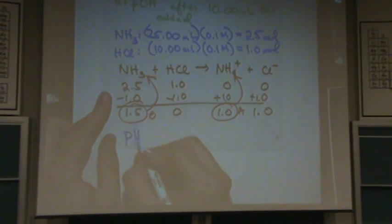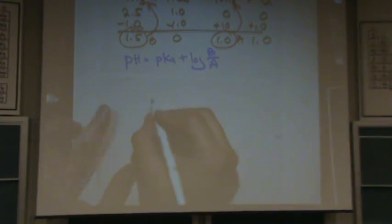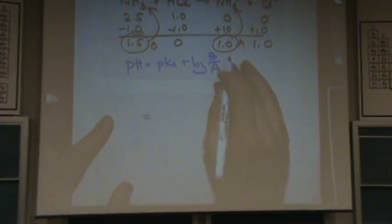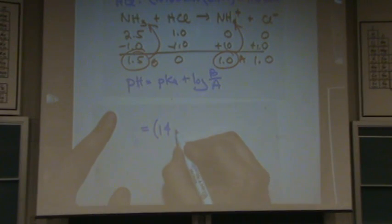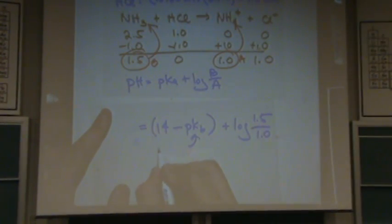Now, pH equals pKa, plus the log of the base over the acid, equals pKa. So, the way I do is 14 minus pKb, because sum of pKa and pKb equals 14, plus the log of the base, 1.5, over the acid, 1.0. By the way, if you forgot, Kb, 1.8 times 10 to the minus 5, that's Kb.